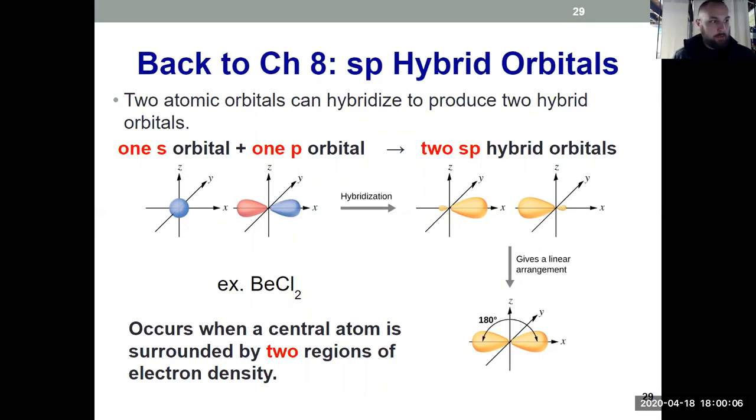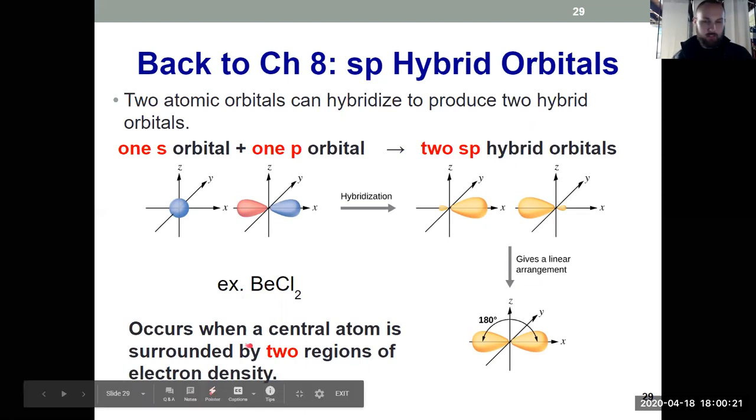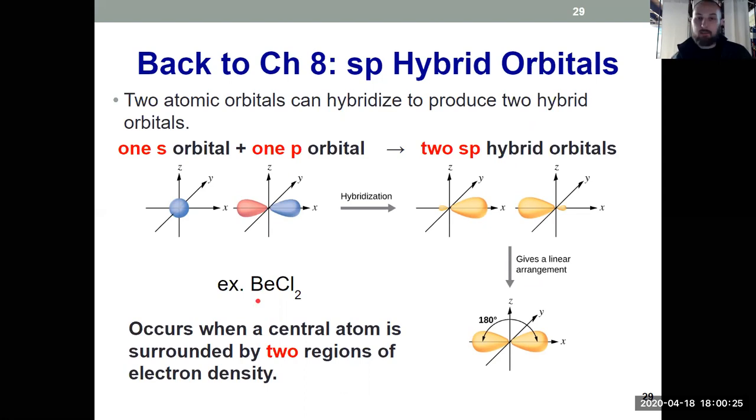So a hybridization, there's five types that we'll see in this chapter. This is the first one. Something that's sp-hybridized occurs when we have our center atom surrounded by two regions of electron density. And remember, this thing has to be participating in some form of bonding in order to have hybrid orbitals. If it was just a lone atom, it wouldn't do it.